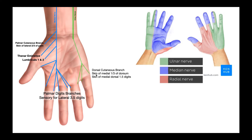The dorsal cutaneous branch supplies the skin of the medial one-third of the dorsum of the hand, and the skin of the medial dorsal one and a half digits — that is on the pinky side. So this area traced out here is supplied by the dorsal cutaneous branch. Additionally, it covers the medial dorsal one and a half digits: this side of the fourth digit and the dorsal aspect of the fifth digit. That's purely sensory.